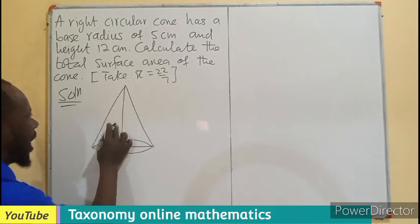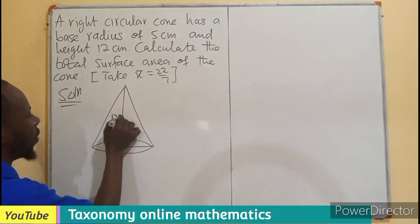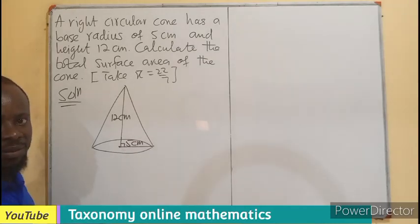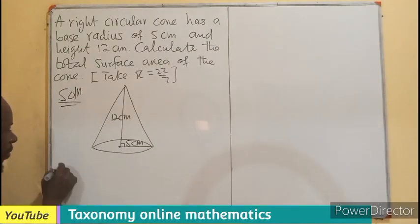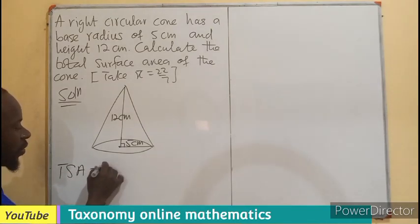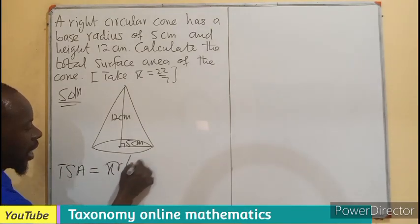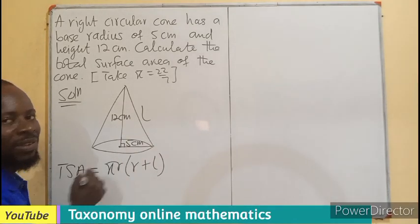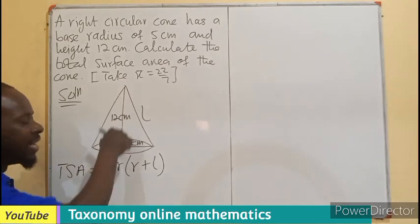So the height is given to us as 12 centimeters and here is 5 centimeters. And if you recall from the formula of total surface area, we said it is πr(r+l). Remember L, where L is the slant height, but not the height itself.